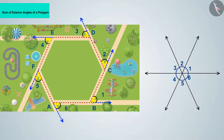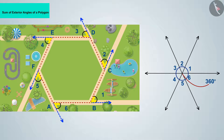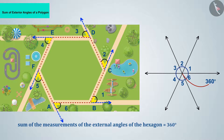Completing one round by walking outside the garden, when connecting all angles formed, they represent a circle. We know the total measure of angles at the center of a circle is 360 degrees. Using this, the sum of measurements of the external angles of the hexagon is 360 degrees.